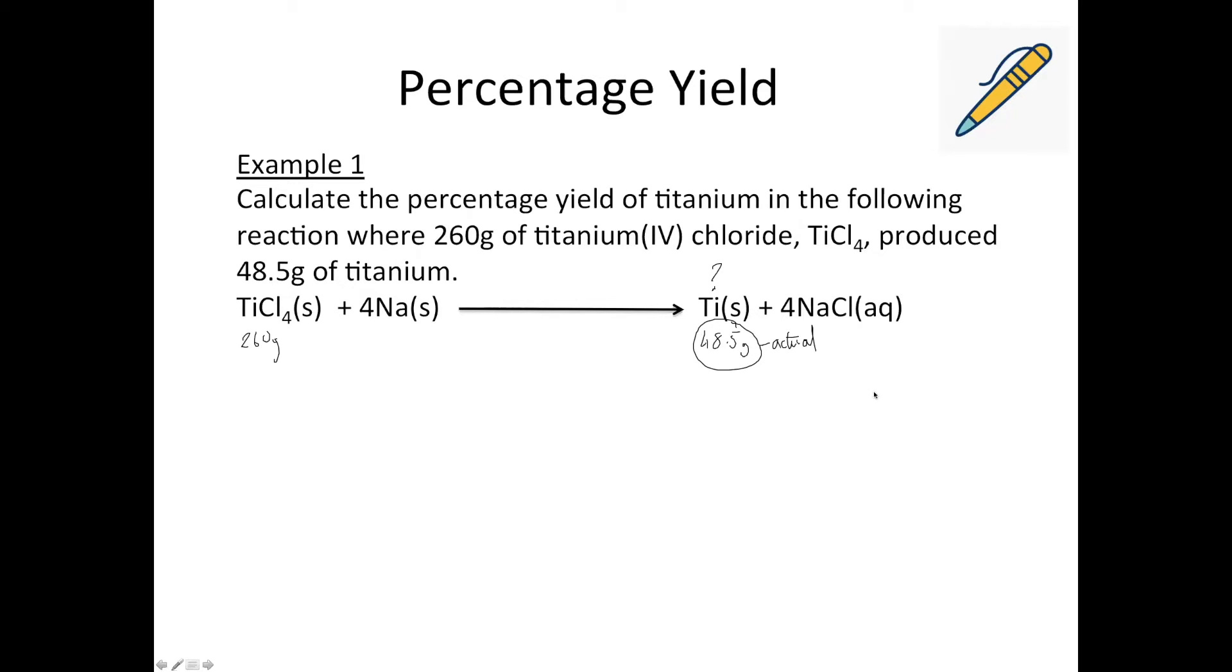What we have to do first before we can use the percentage yield equation is work out our theoretical yield. So basically every percentage yield calculation starts with working out a theoretical yield. So even if you just do that bit you can pick up some of the marks. So there are a couple different ways you can do it. You can do it by a direct proportion, which I'm going to show you first, and then you can also do it by calculating the number of moles, which I'll also show you in this example, but then for the rest of the examples I'll probably just do it by direct proportion. So if we take the balanced equation, one mole of titanium, I'll write the formulas in so you don't get confused, of titanium chloride should produce one mole of titanium in an ideal world.